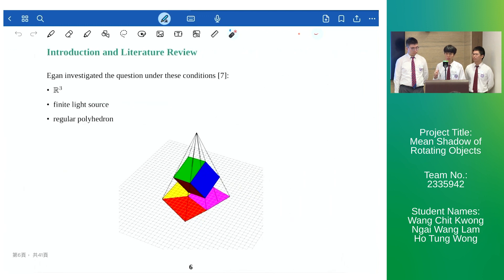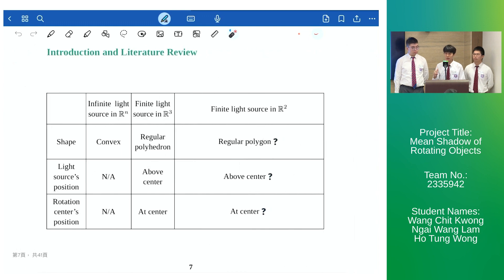Egan investigated this case of the problem in R3. More specifically he derived a formula for the mean shadow of regular polyhedron cast by a finite light source. Summaries of their findings are given below and we can see that for the case of finite light source the position of the light source and the rotation center can no longer be neglected.